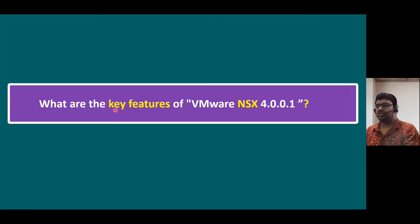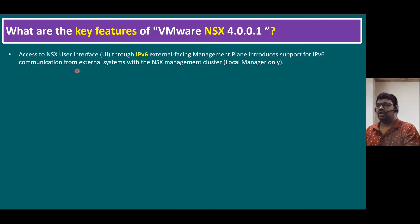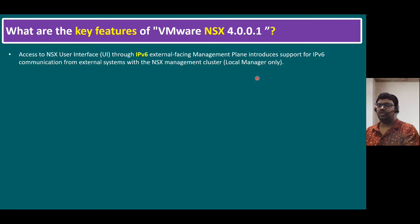What are the key features of VMware NSX 4.0.1? The main key feature in this version is the ability to access the NSX user interface through IPv6. Earlier with NSX-T, we could access only with IPv4. But from the latest version, NSX 4.0.1, we can access our management interface through IPv6 external-facing management plane, introducing support for IPv6 communication from external systems with the NSX management cluster — local manager only.